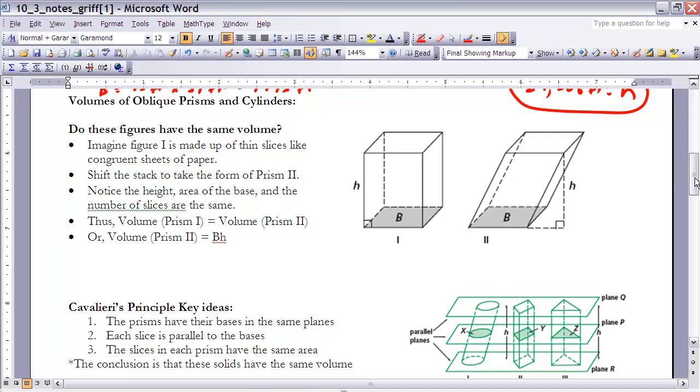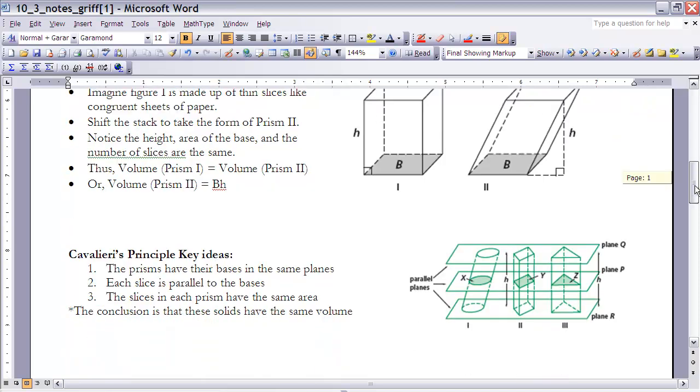And Cavalieri's Principle is that, number one, the prisms have their bases in the same plane. So if we have a plane that contains two bases, and each slice is parallel to the bases, the slices in each prism have the same area.